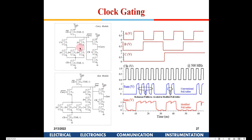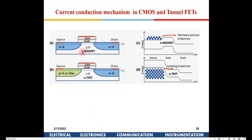In these circuits, tunnel FETs were used. In a MOSFET you have N and P regions, and applying a gate voltage reduces the barrier for electrons to travel between N+ regions. In a tunnel FET the structure is different — it is a P-I-N structure (p+, intrinsic, n), so when a gate voltage is applied, the P region is reverse biased and electrons tunnel from the valence band through to create conduction.